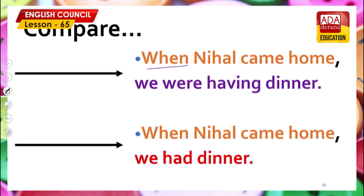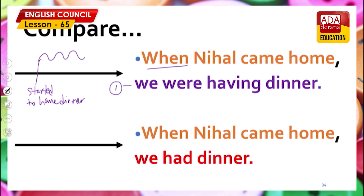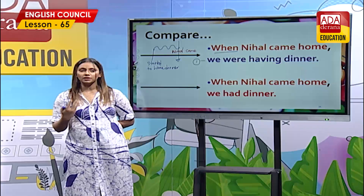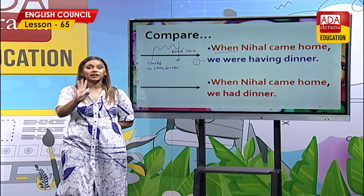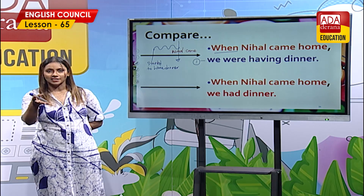When Nihal came home, we were having dinner. What does this mean? We started having dinner before Nihal arrived. Nihal came home — that's when he arrived — and we were already eating. So the first action is 'we were having dinner,' and Nihal coming home is the second action that interrupted it. After Nihal came, I don't know whether we continued to have dinner or stopped.